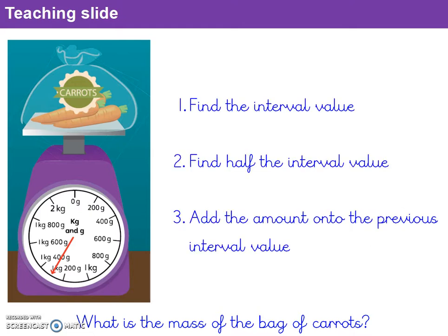Let's recap on those strategies we've just used. Number one, we've got to find the interval value. We can find that by saying each of these jumps is from 1kg and 200g to 1kg and 400g. Each jump is worth 200g. Then we're going to find half the interval value, because we know our arrow is pointing halfway. So half of 200g gives us 100g. Then we're going to add the amount we've just got, that half interval value of 100g, onto the previous interval value, in this case 1kg and 200g. Add on your 100 to give you 1kg and 300g.